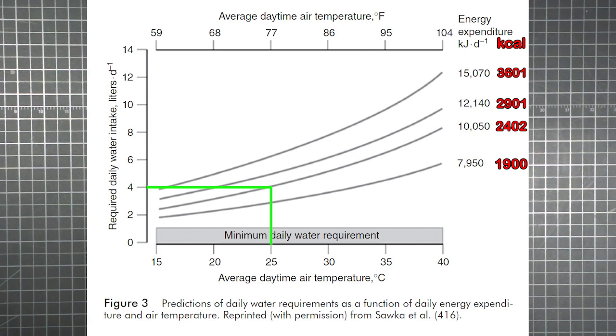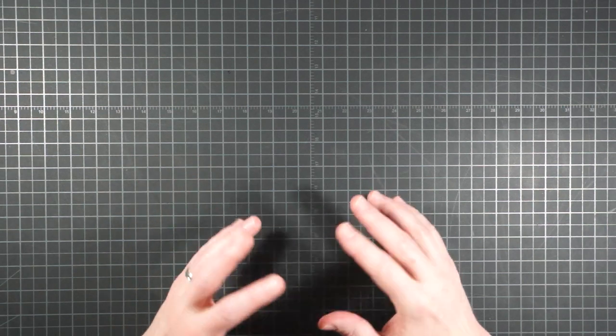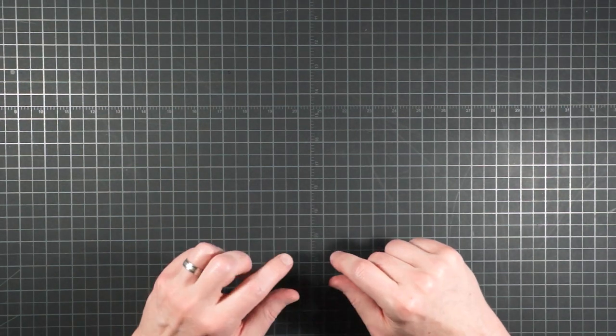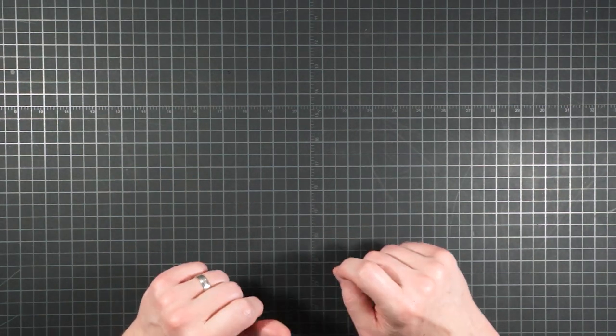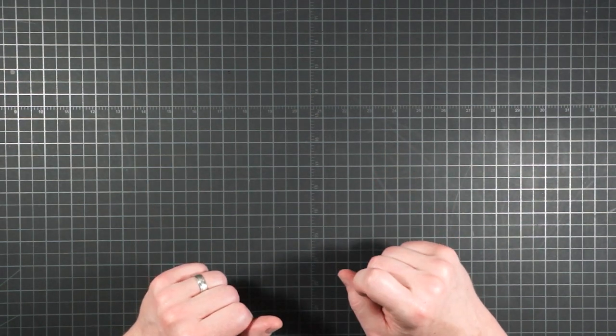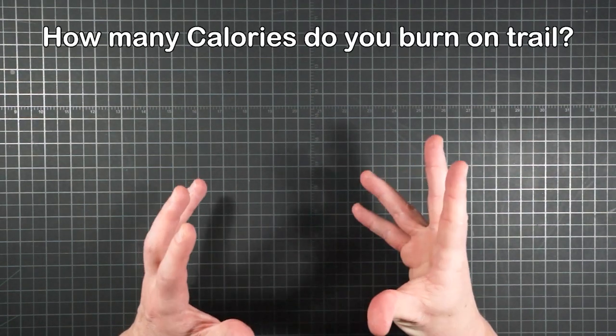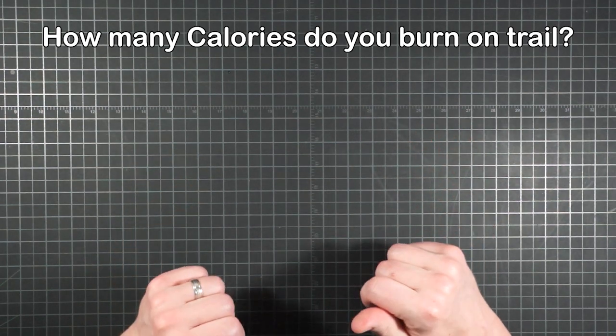Very cool, right? I mean 77 is kind of warm for hiking, but it's cool how you can look up predicted water needs based on the expected conditions of your hike. Of course that immediately brings up the question of how many calories you burn in a day on the trail.